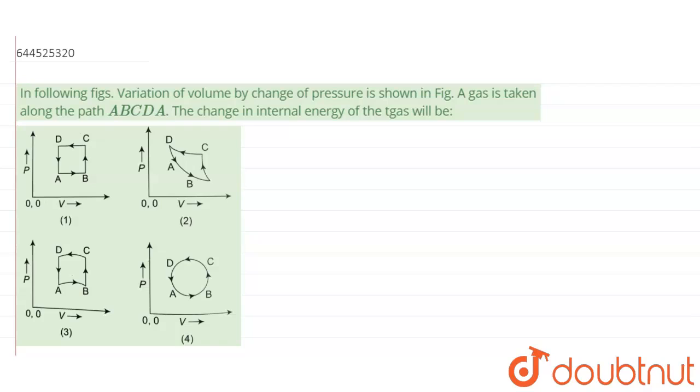In following figures, variation of volume by change of pressure is shown in figure. A gas is taken along the path ABCDA. The change in internal energy of the gas will be? Okay, now as we can see...